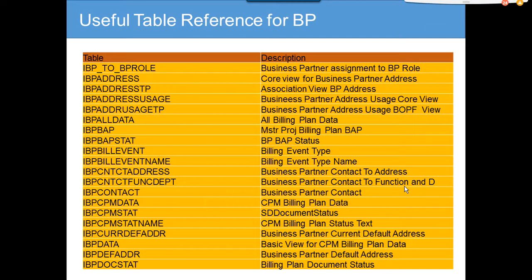Now we are going to cover the useful table reference for business partners. How can you live within an SAP environment without a table? SE16 is there — the SE16 transaction code where you check tables. I have jotted down most of the tables that are available in business partners.